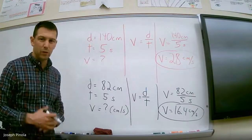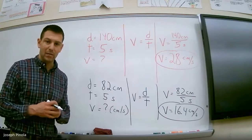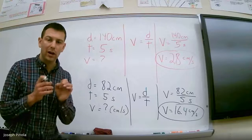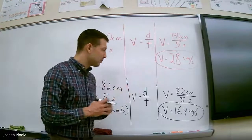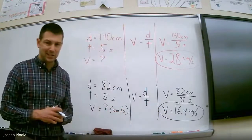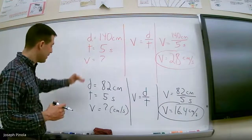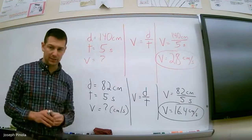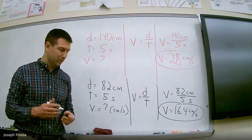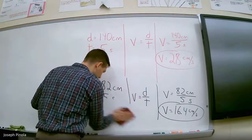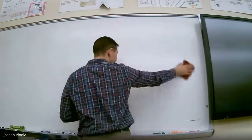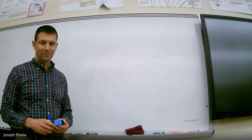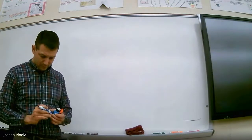When we started the video today, we saw that the red train was clearly faster than the black train. But now we have numerical proof — something that scientists call quantitative data. We can clearly see that the speed of the red train at 28 centimeters per second is larger than the speed of the black train at 16.4 centimeters per second. That makes sense because in the same amount of time, the red train traveled a much further distance than the black train.